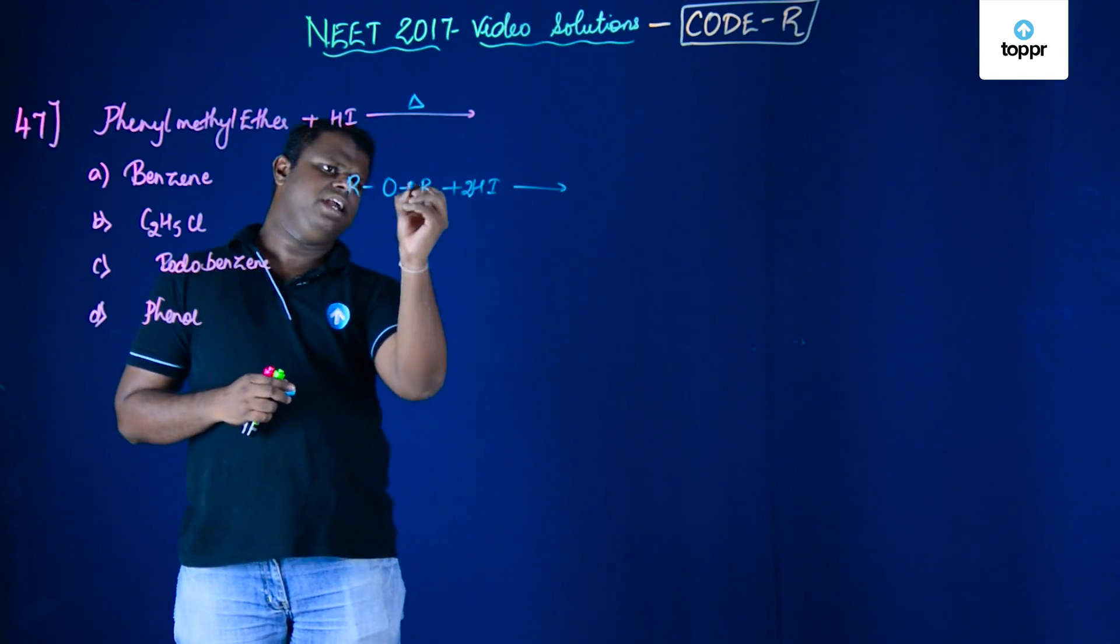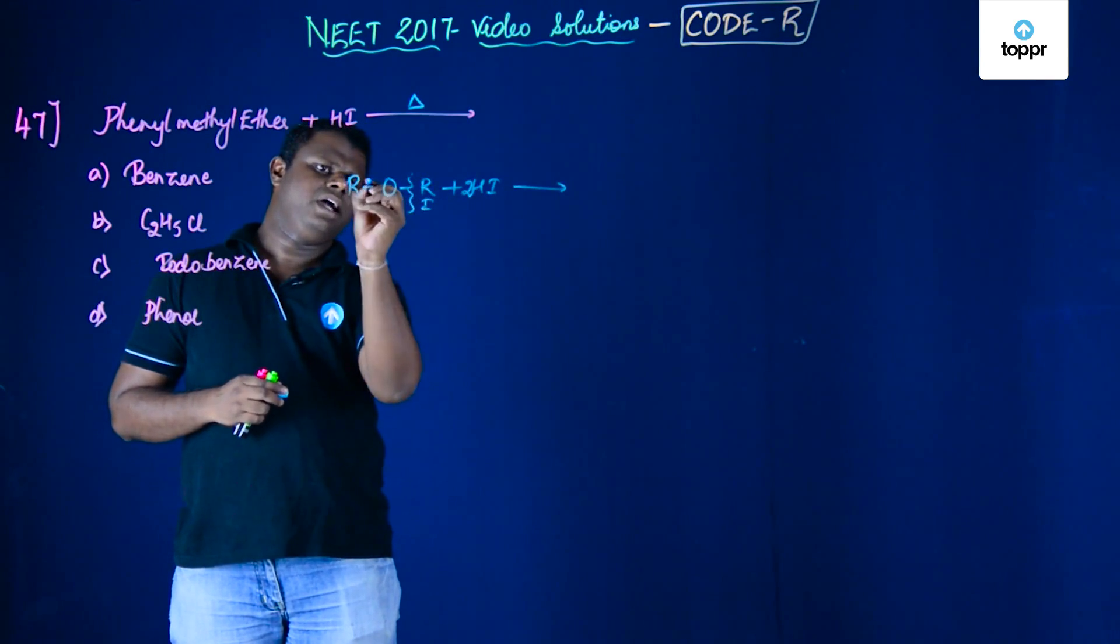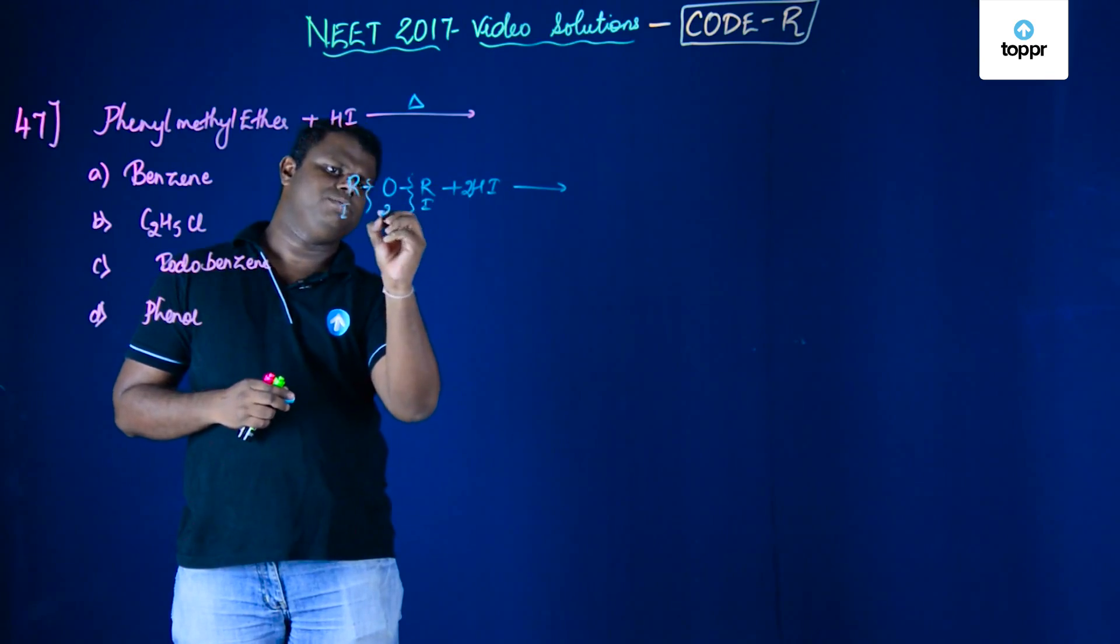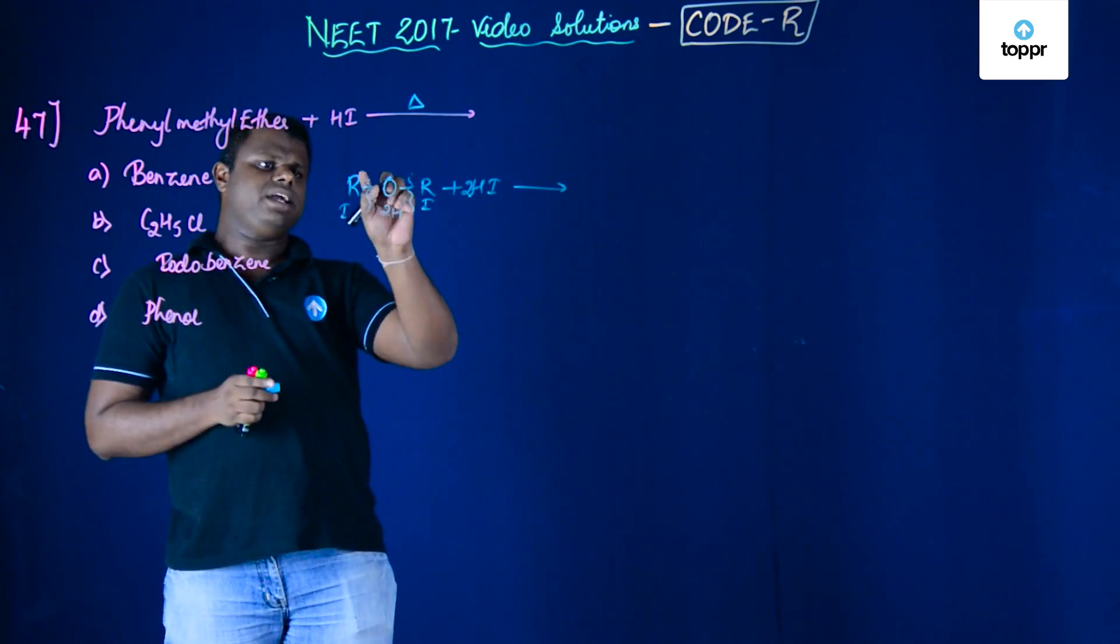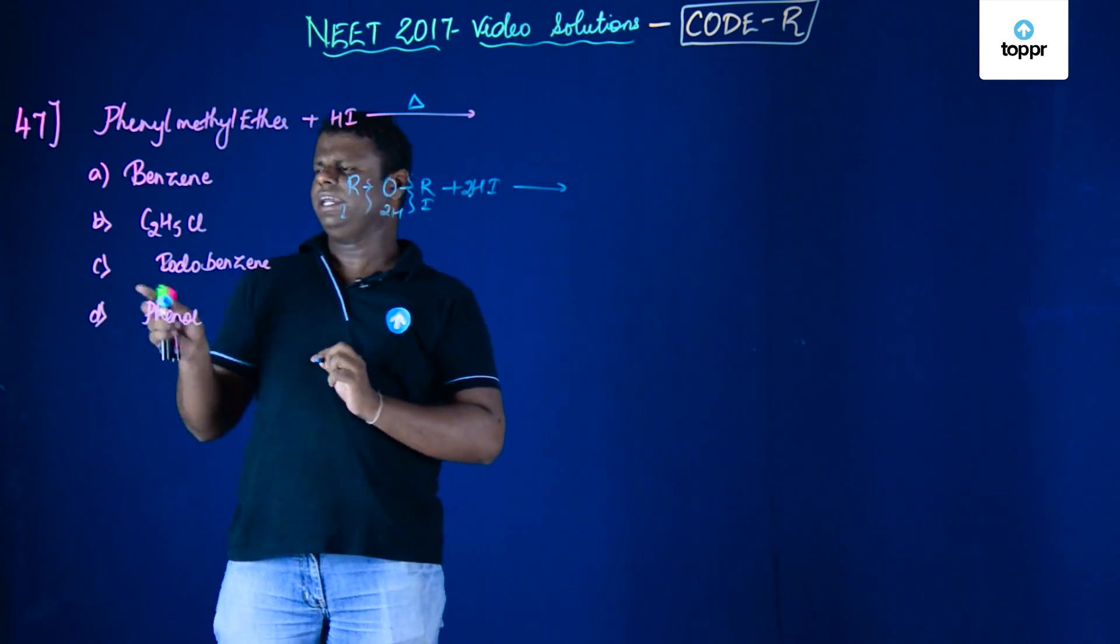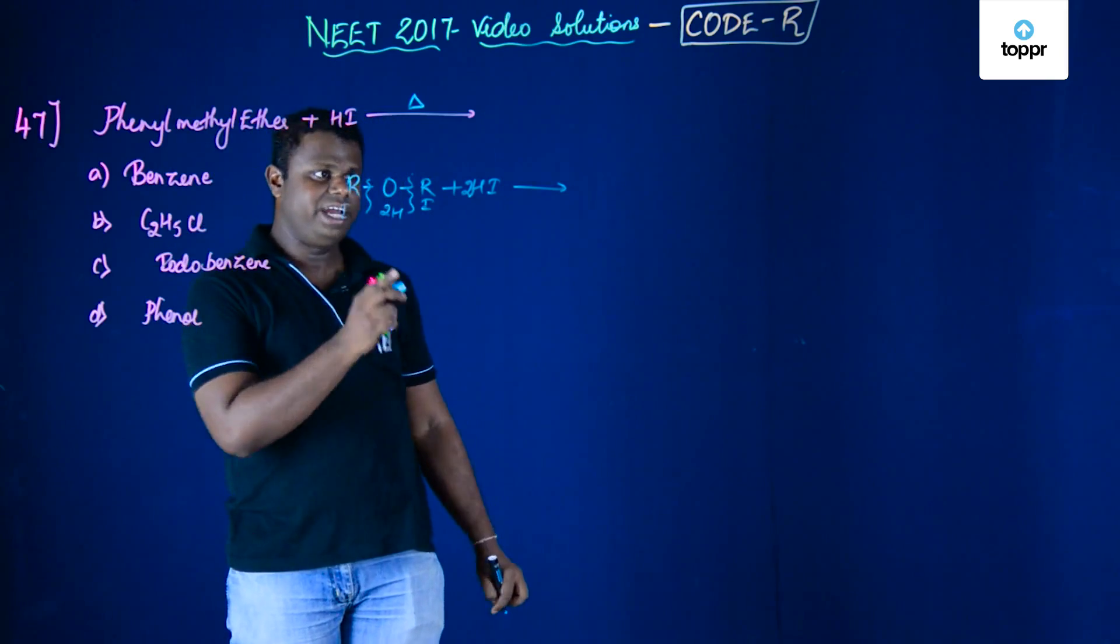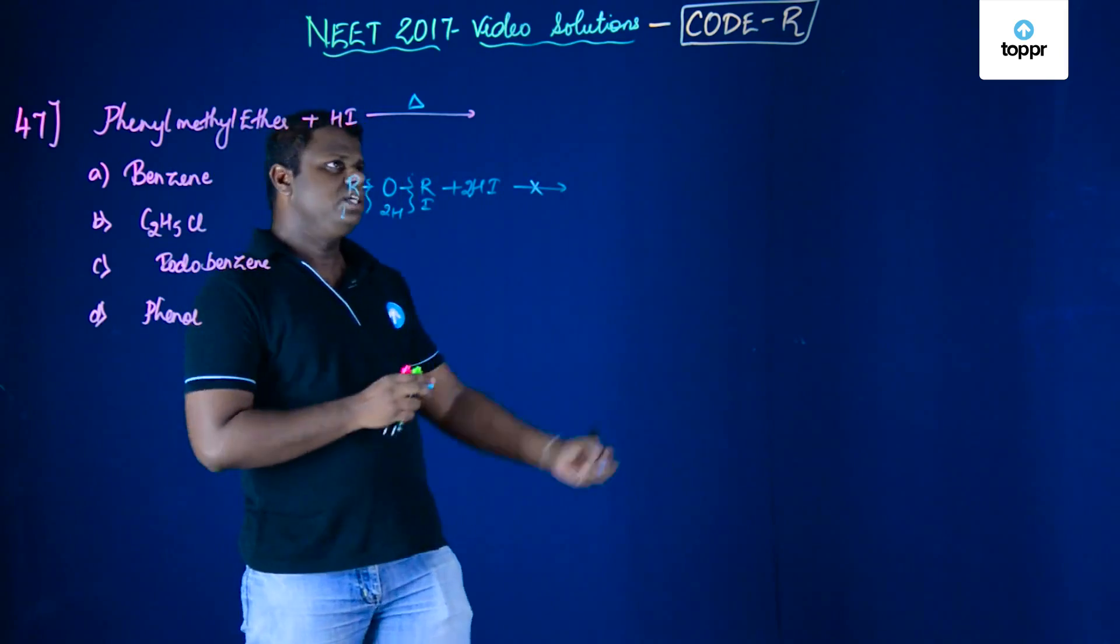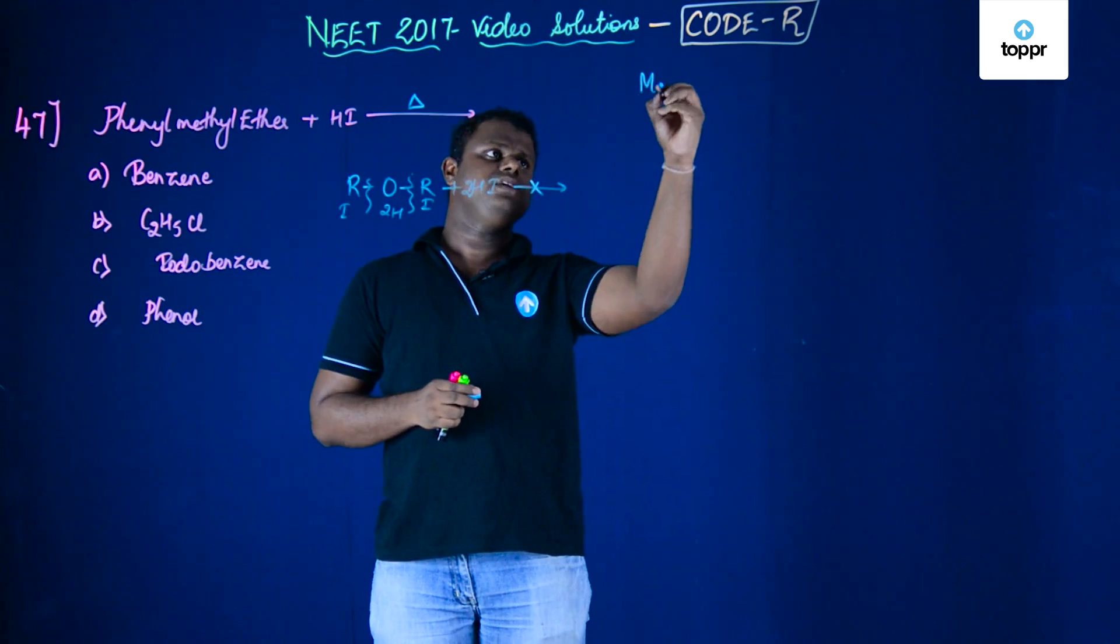Two moles of HI are needed. The bond breaks, I comes here, I comes here, and 2H comes here as a result of which you get RI. You might get confused to giving iodobenzene as the answer. But this is actually not true.